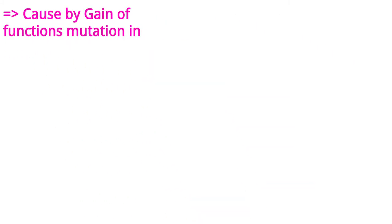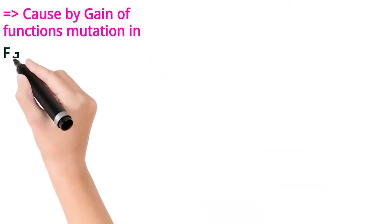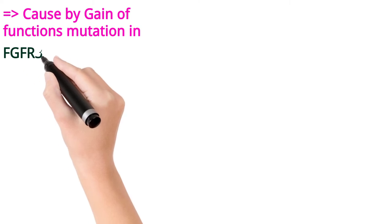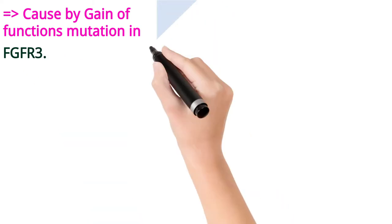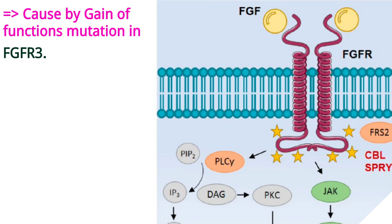It is actually caused by a gain-of-function mutation in a gene called Fibroblast Growth Factor Receptor 3 (FGFR3), which encodes a protein called Fibroblast Growth Factor. Here you can see the picture showing normally the fibroblast growth factor binding to the fibroblast growth factor receptor.